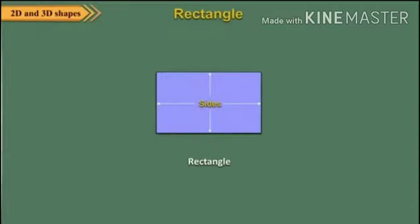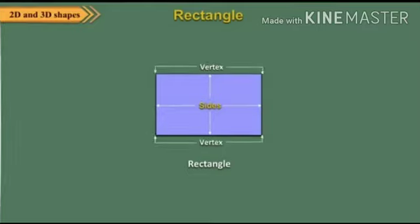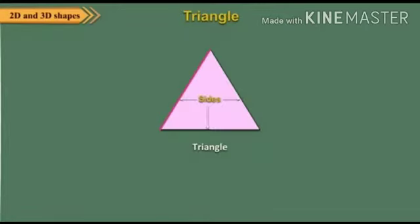A triangle has three sides and it has three vertices or corners.